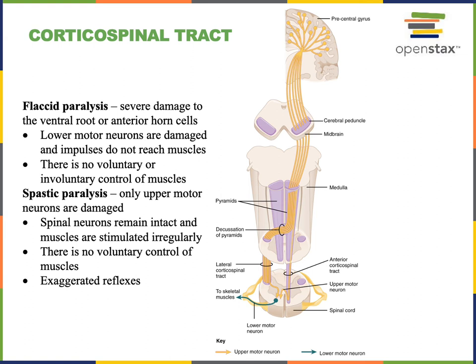Flaccid paralysis results from damage to the lower motor neurons, causing an inability to contract the skeletal muscles innervated by those lower motor neurons. There is no voluntary control and no involuntary control, so those muscles will have no muscle tone — they will be limp all the time — and reflexes will also be lost as a result.